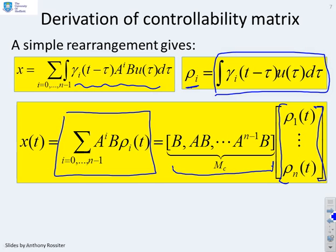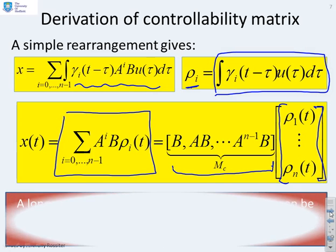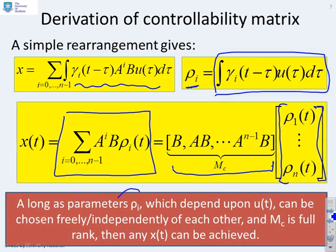It reduces to the sum from i=0 to n-1 of A^i B times ρ_i(t). And that can then be rewritten using matrix form as this controllability matrix times a vector of these rows. So now we get to the nub of the issue. So x(t) is given by the controllability matrix times a vector of rows. So as long as these parameters ρ_i, which depend upon u(t) and u(t) you can choose, can be chosen freely and independently of each other, and also if M_c is full rank, then clearly I can choose x(t) to be anything I like. But there's two assumptions there. One, ρ_i(t) can be chosen freely and two, M_c is full rank. Clearly, if M_c is not full rank, then because x(t) depends on it, I can no longer get any x(t) I like. And so x(t) is no longer fully controllable.